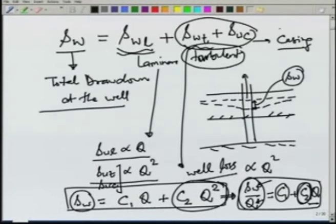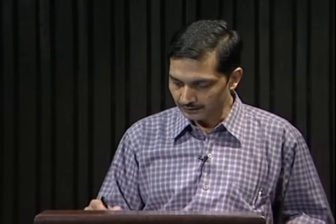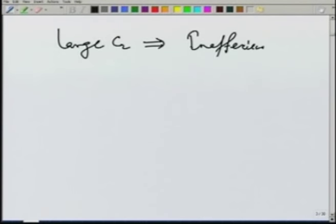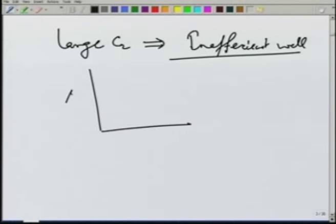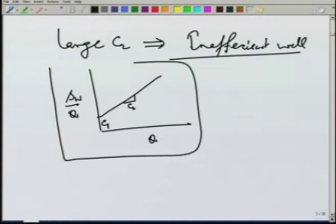We want C₂ to be small so that the losses are minimum. If well losses are large — for example, if C₂ is large — this will indicate an inefficient well. If we plot S_w versus Q, we get a straight line with intercept C₁ and slope C₂. So this method gives us a way of finding C₁ and C₂, and we see that if C₂ is large, the well is inefficient. If C₂ is very large, the well may need to be replaced.